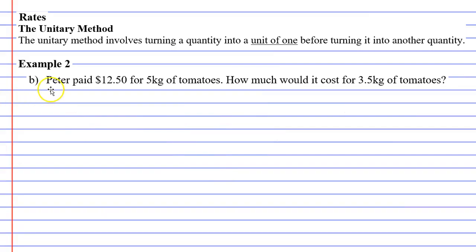Let's move to question B. Peter paid $12.50 for 5 kilograms of tomatoes. How much would it cost for 3.5 kilograms of tomatoes? Let's draw our four boxes. We have $12.50 for 5 kilograms, and they want to know how much it would cost for 3.5 kilograms of tomatoes.